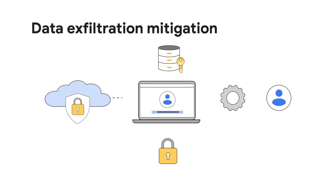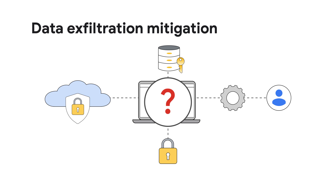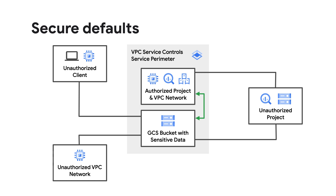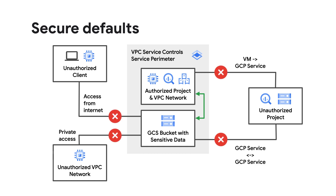One important security aspect that VPCSC helps with is reducing risks of data exfiltration. VPCSC, by default, prevents any connectivity from outside the perimeter, thus immediately reducing the risk of data exposure or exfiltration. Any connectivity attempts from threat actors outside the perimeter is immediately blocked. Users inside the perimeter cannot copy data to Google services outside the perimeter as well.